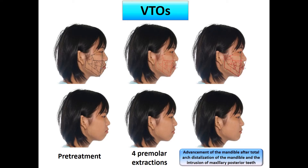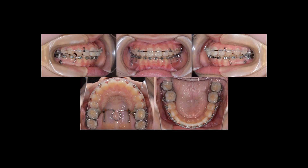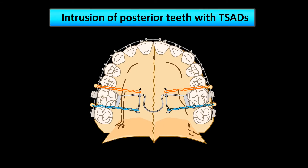These are the VTO images of four premolar extractions and advancement of the mandible after total arch distalization of the mandible and intrusion of maxillary posterior teeth. This is an illustration of the intrusion of maxillary posterior teeth using TAS.